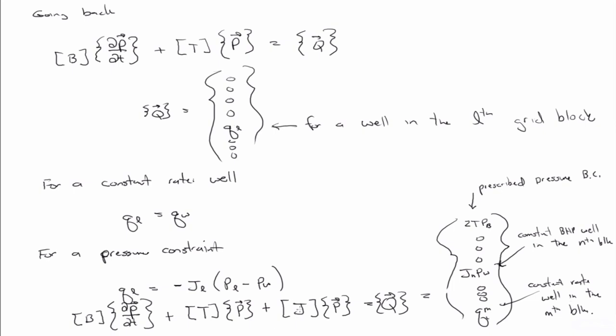So then just to be clear, what goes in this J matrix is, J is a diagonal matrix, so the J matrix is a diagonal matrix where there's zeros everywhere except for where there's a well, right? So in that case, there's the J N term associated with the nth grid block, right? And it's zeros everywhere else. So, and of course, there could be multiple ones, there could be additional wells too there.